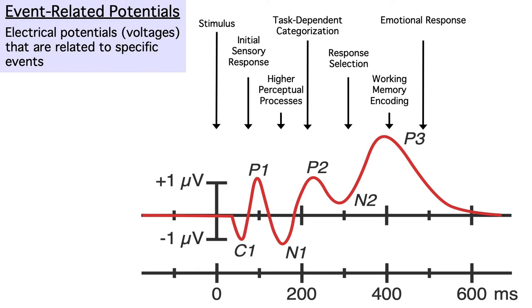In a typical ERP experiment, we time lock to the onset of a stimulus. In other words, time 0 is stimulus onset. When we do this, we can track the flow of information about the stimulus through the brain over a period of several hundred milliseconds.